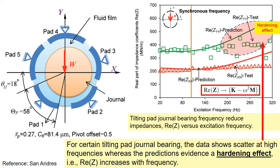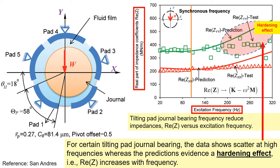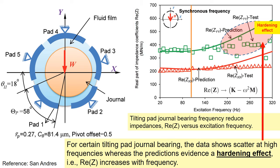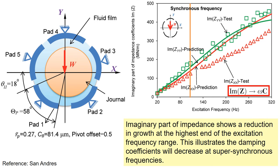Here is an example of frequency-dependent force coefficients. The x-axis is the excitation frequency and the y-axis is the real part of impedances. The data shows scatter at high excitation frequency, which can be due to a hardening effect indicating increasing stiffness. The frequency-dependent force coefficients for the imaginary part are also presented, and these values can be applied in rotor dynamic analysis to accurately predict the rotor responses.